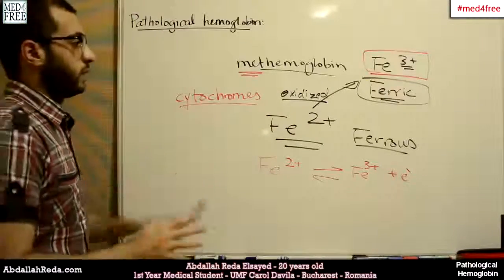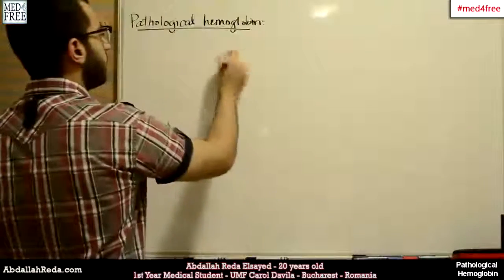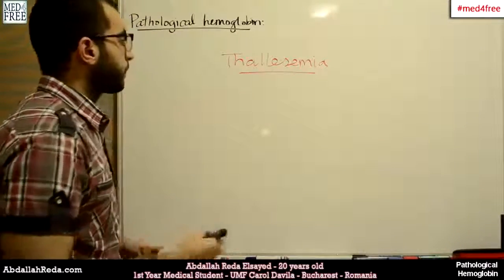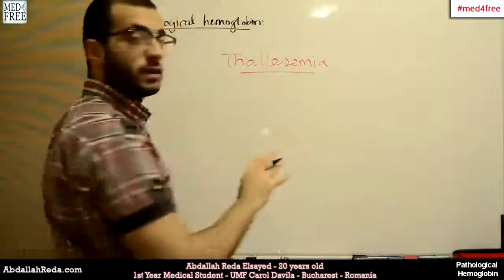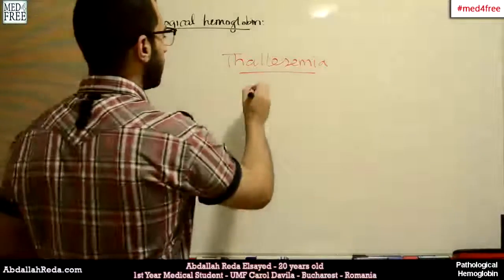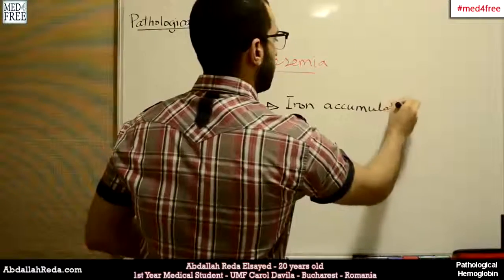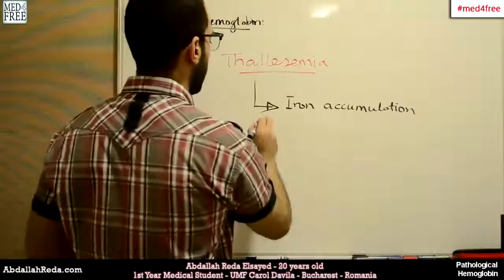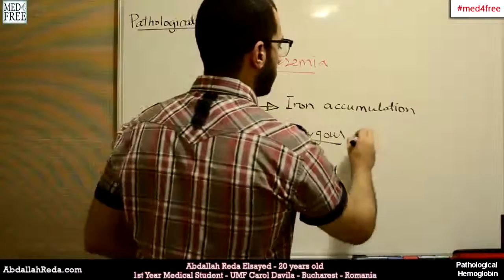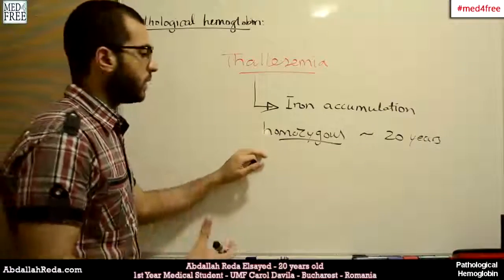Cytochromes are responsible for ionization from ferrous to ferric and vice versa — these are very important. Another case is thalassemia. In this condition, the molecular mass of the hemoglobin chains is lower than normal, and this causes iron accumulation. It is a genetic condition with a homozygous form — the pure form — in which the individual dies at around 20 years of age. The heterozygous form does not have obvious problems.